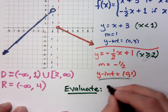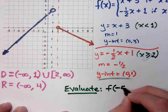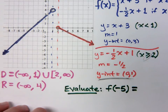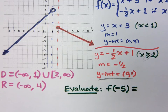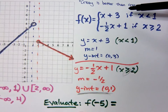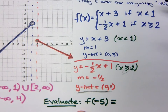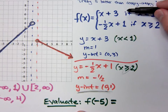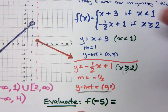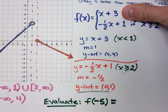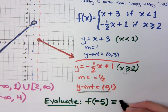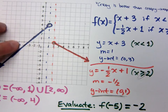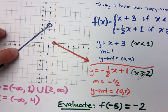If I ask you to evaluate f of negative 5, I'm asking you to evaluate a function — so how many answers should you get? One. Plug in negative 5: is it less than 1? Yes. So plug it into the first piece. Negative 5 plus 3 gives negative 2. And if you look at the picture, the point negative 5, negative 2 is right there on the graph.